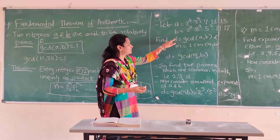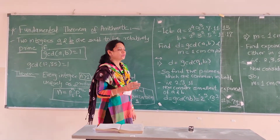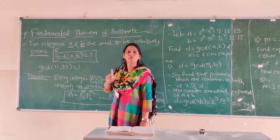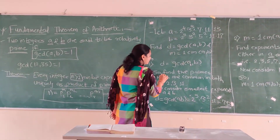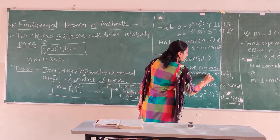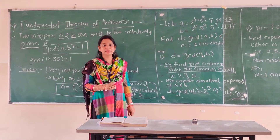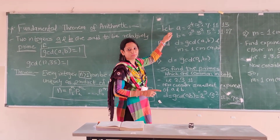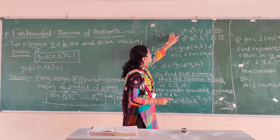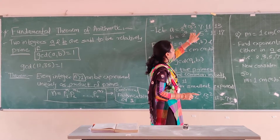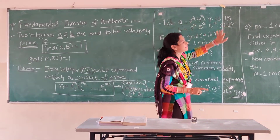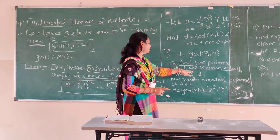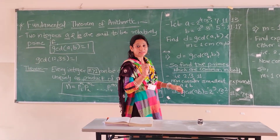The first step when finding GCD by the Fundamental Theorem of Arithmetic is to find the primes which are common in both a and b. Looking at the primes: 2 is common, 3 is common, 7 is not in b, 5 is not in a, 11 is common, 13 is only in a, 17 is only in b. So 2, 3, and 11 are the common primes. This is Step 1.